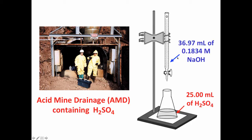And then here is a picture of the apparatus. We have a 25 milliliter sample of sulfuric acid, 25.00 milliliters because we've used a volumetric pipette to measure it very accurately. We titrate using the sodium hydroxide solution of known molarity, in this case 0.1834 molar. The sodium hydroxide solution has been standardized to know its concentration very accurately. And then it took 36.97 milliliters of this solution to neutralize the acid.